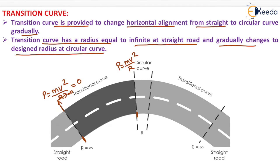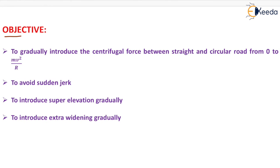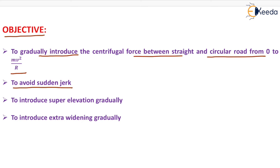In this way we increase the centrifugal force gradually. The objectives of providing a transition curve are: first, to gradually introduce the centrifugal force between straight and circular road from 0 to mv²/r; second, to avoid sudden jerk; third, to introduce super elevation gradually; and fourth, to introduce extra widening gradually.